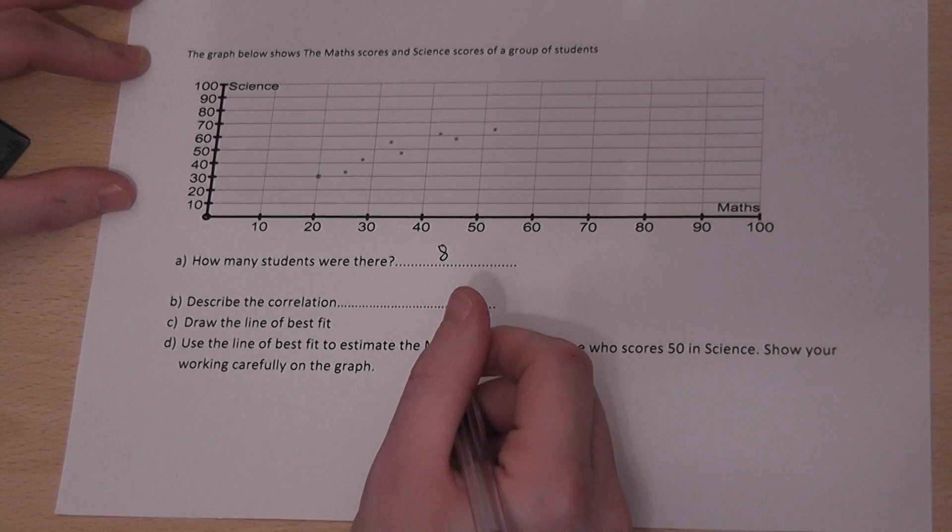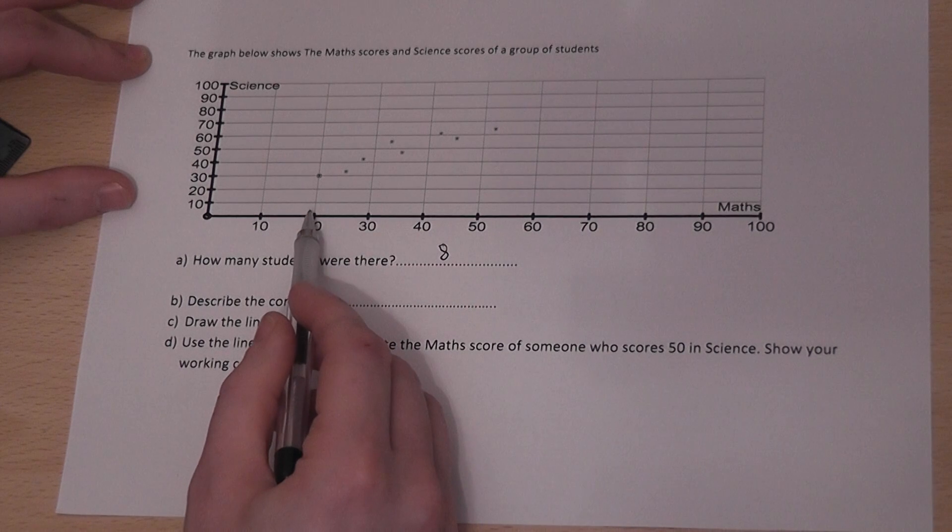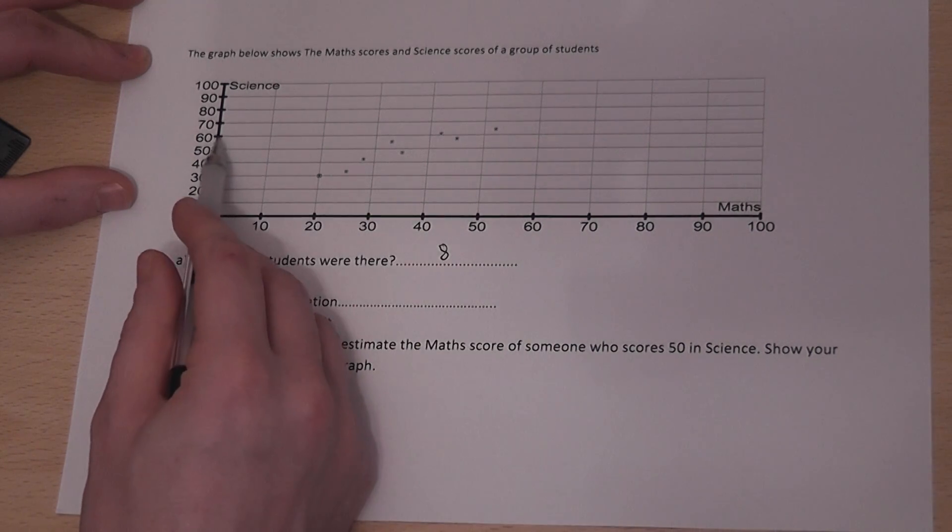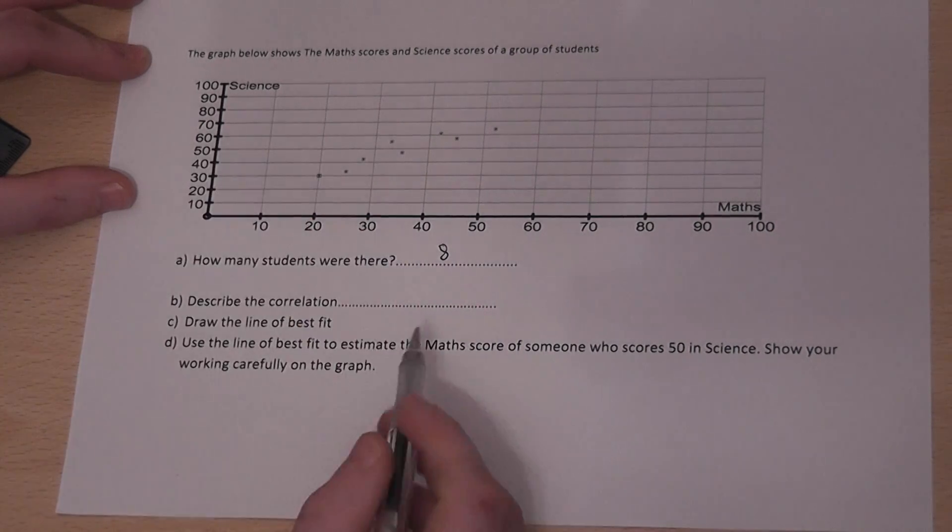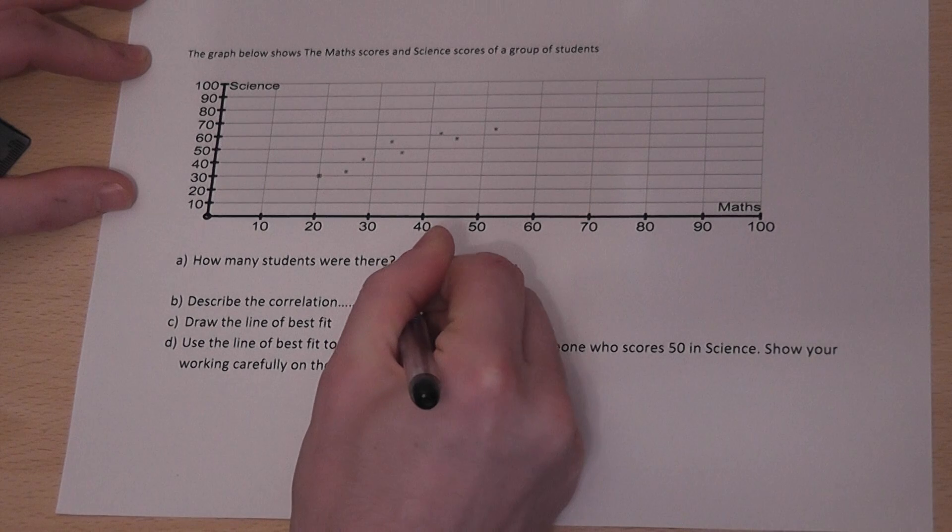Now what's quite obvious, I think, from this graph is that generally, as the students score higher on their maths test, they also score higher on their science test. So this type of correlation is called a positive correlation.